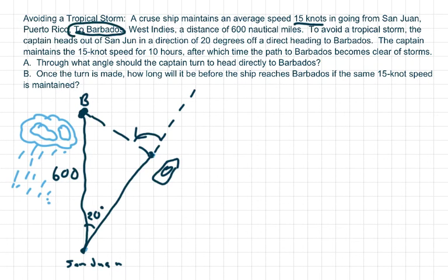And this is San Juan, Puerto Rico, and Barbados, West Indies. So he travels a distance of 600 nautical miles, but to avoid a tropical storm, he takes a 20 degree turn and heads out this way. Now, he maintains a 15 knot speed for 10 hours, after which time he becomes clear of storms.